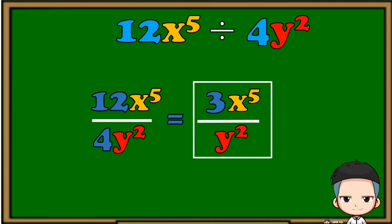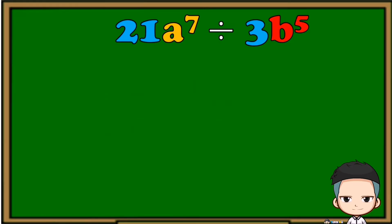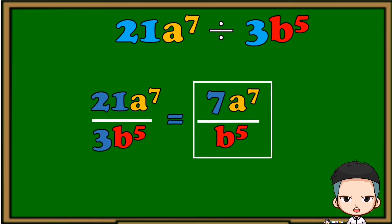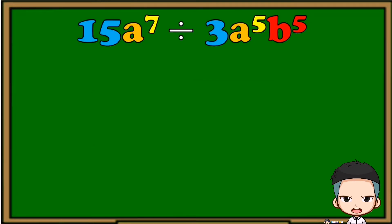Another one: 21a raised to 7 divided by 3b raised to 5. Put them in fraction form, divide the numerical coefficients, and copy the variables with their exponents — a raised to 7 on the numerator and b raised to 5 on the denominator. The final answer is 7a raised to 7 over b raised to 5.